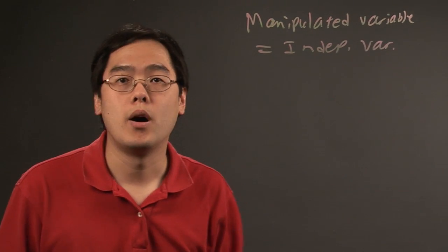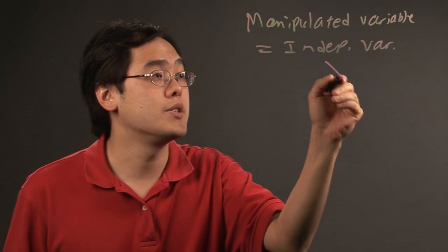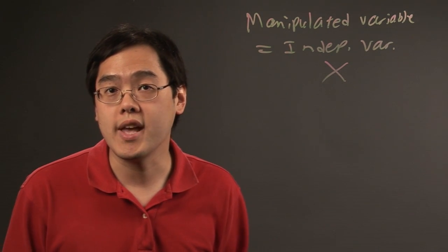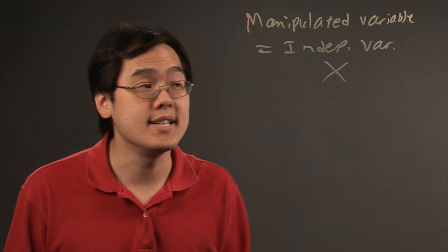Often times the independent variable is known as the x variable. So you pretty much know exactly where the x variable axis is.